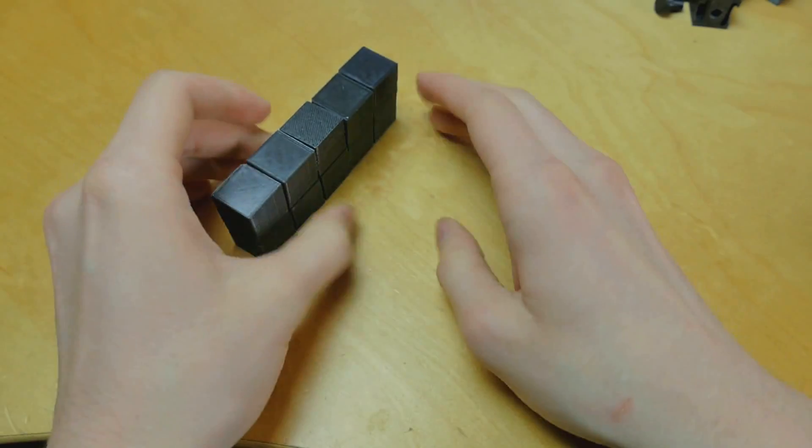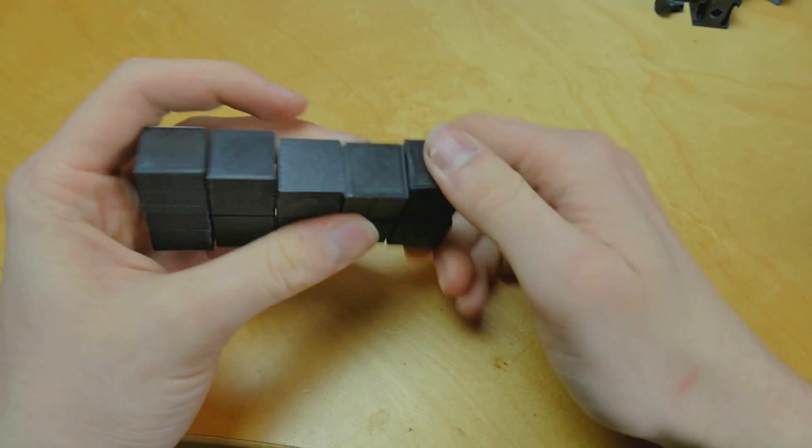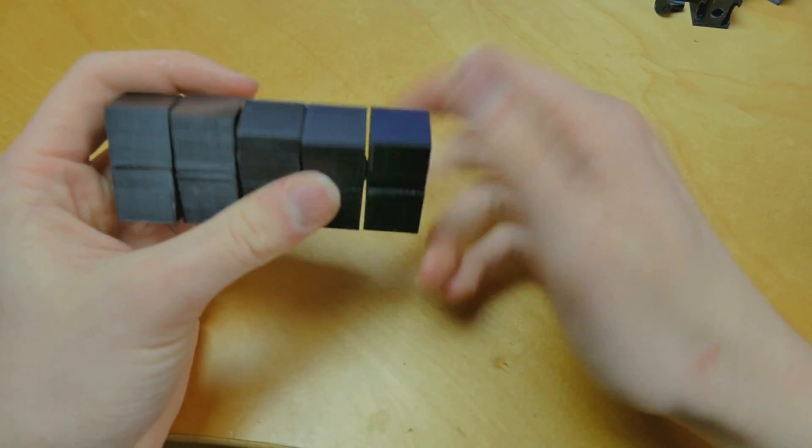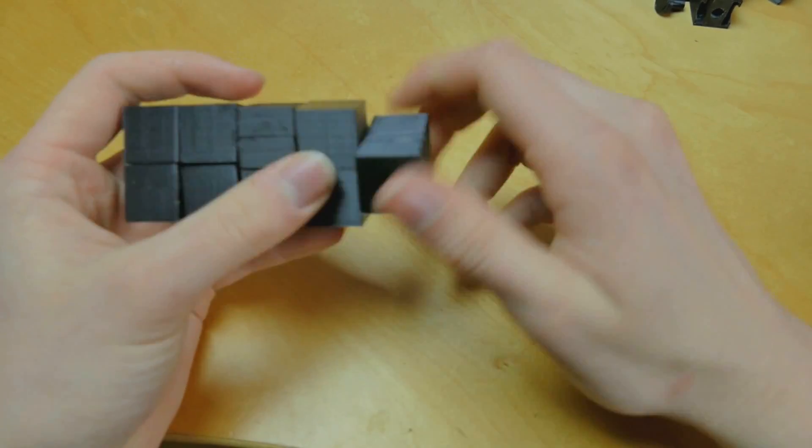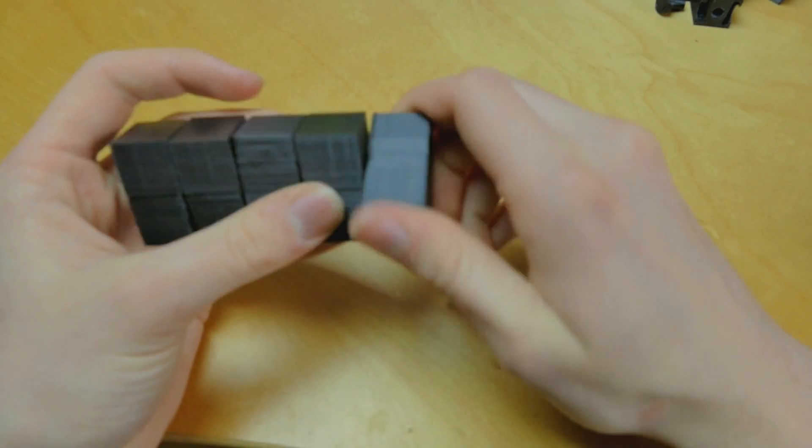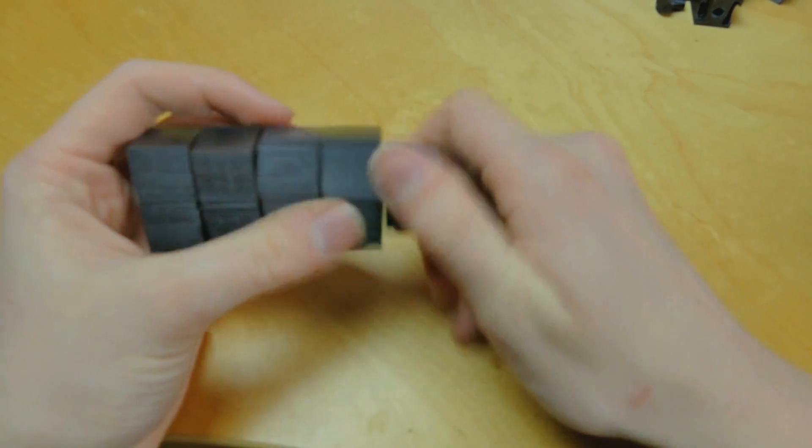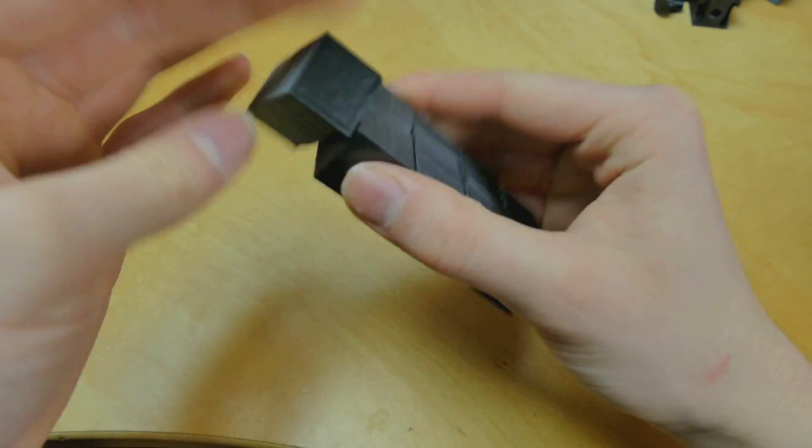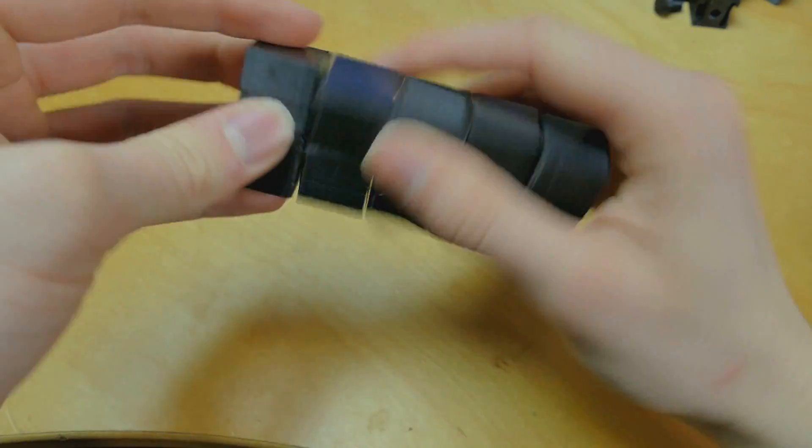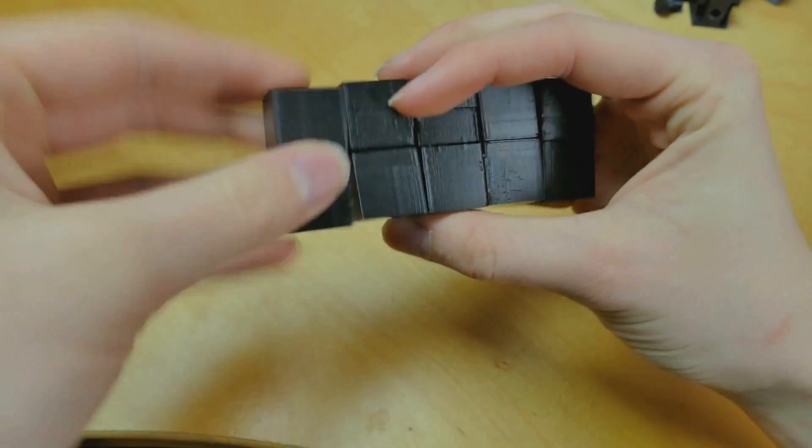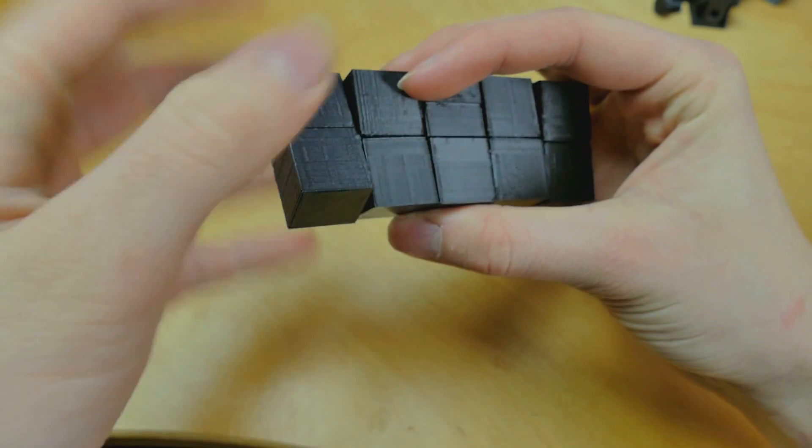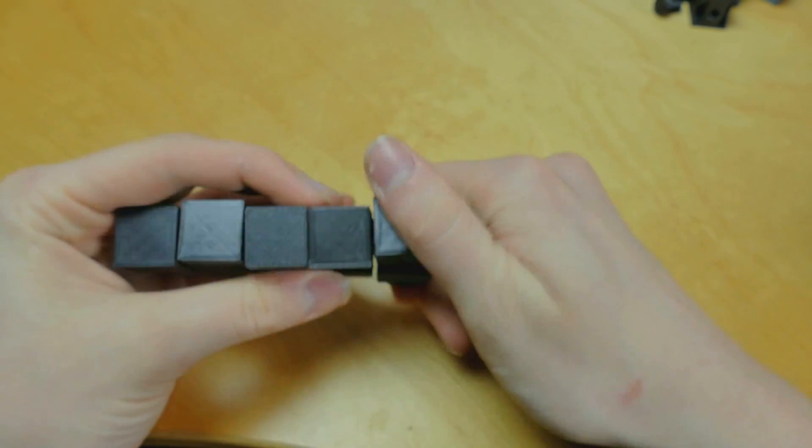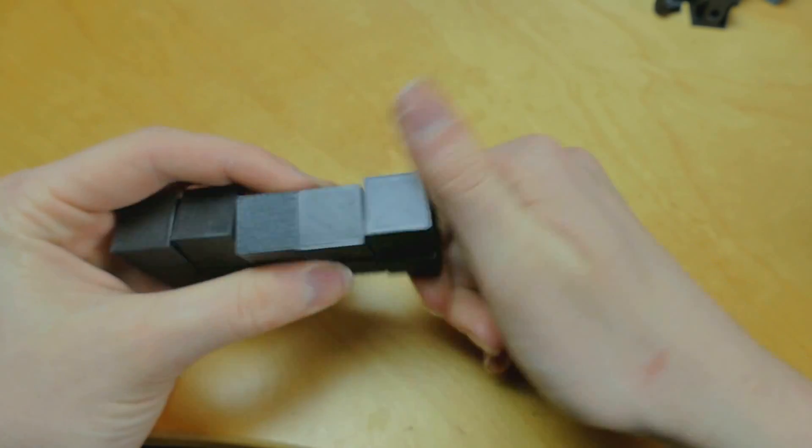The outer layers, they're a little bit more difficult to turn. They catch a bit more, they're also a lot louder. One of them is a lot better than the other though. This one's really nice, it's the best turning layer by far. But this one, a little more catchy but it still works.